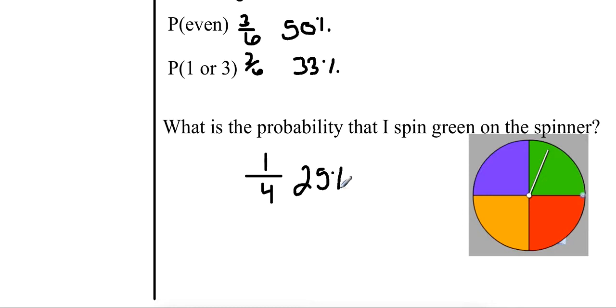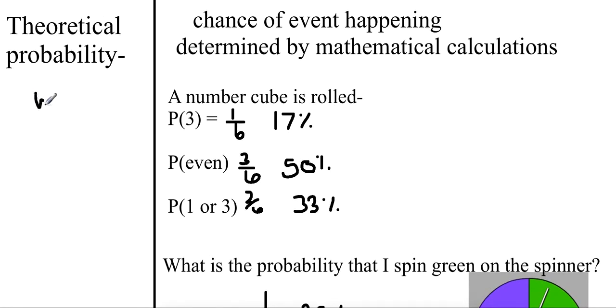So remember, the easiest way to remember probability is what I want to happen over my total. So we're setting up that relationship: what I have over the total.